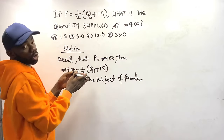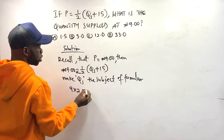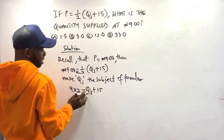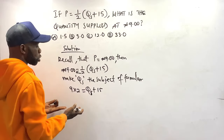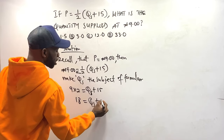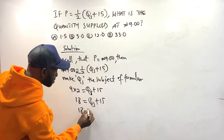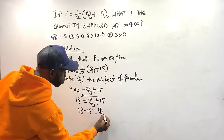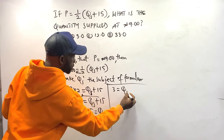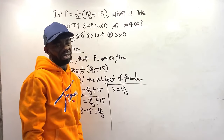QS is trapped, so we multiply both sides by 2: 9 × 2 = QS + 15, giving us 18 = QS + 15. Collecting like terms: 18 − 15 = QS, therefore QS = 3. Option B is our answer. It's a question that takes just 10 seconds.